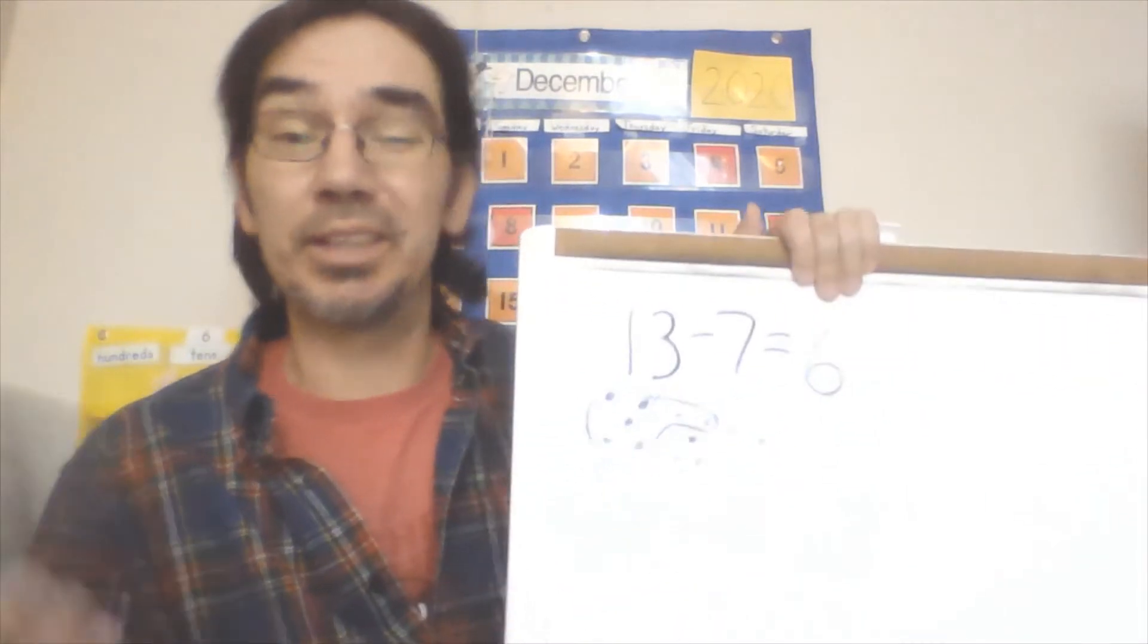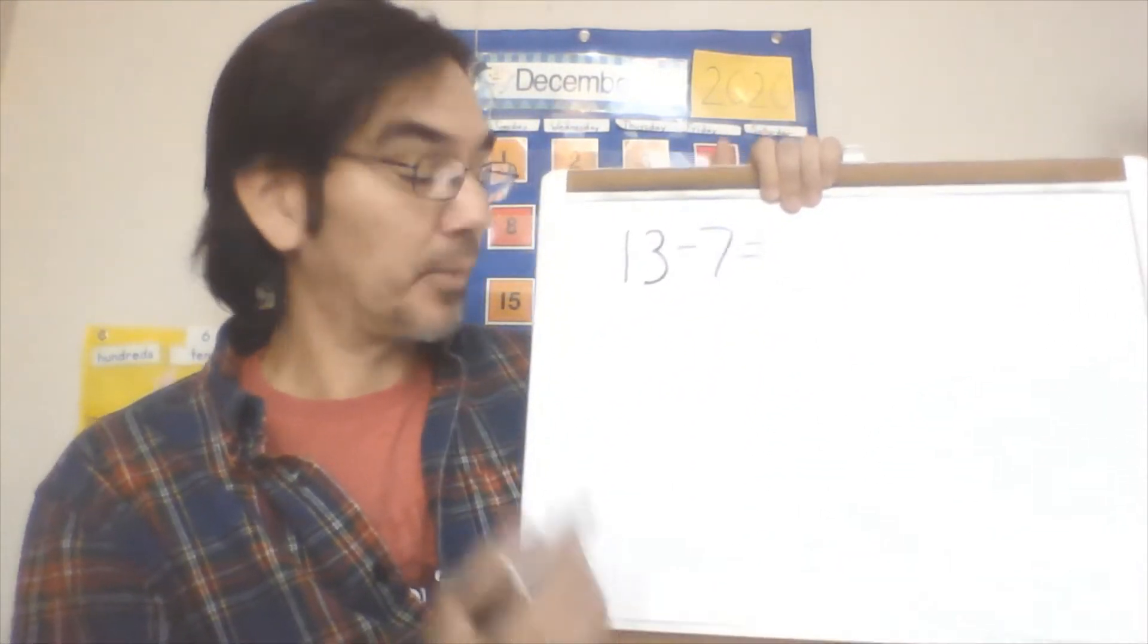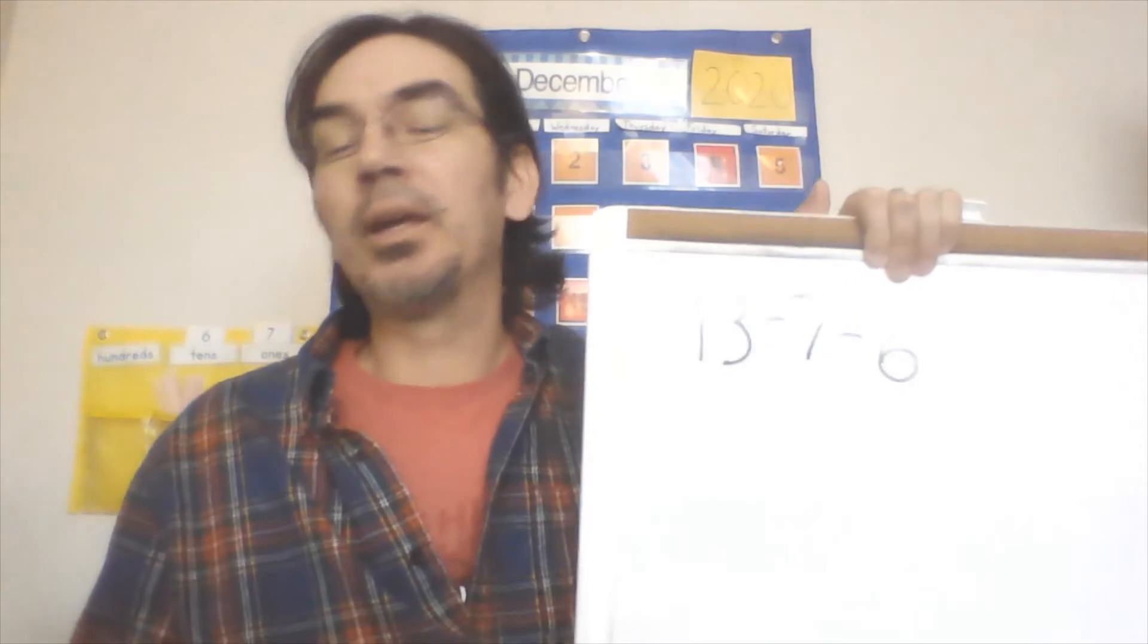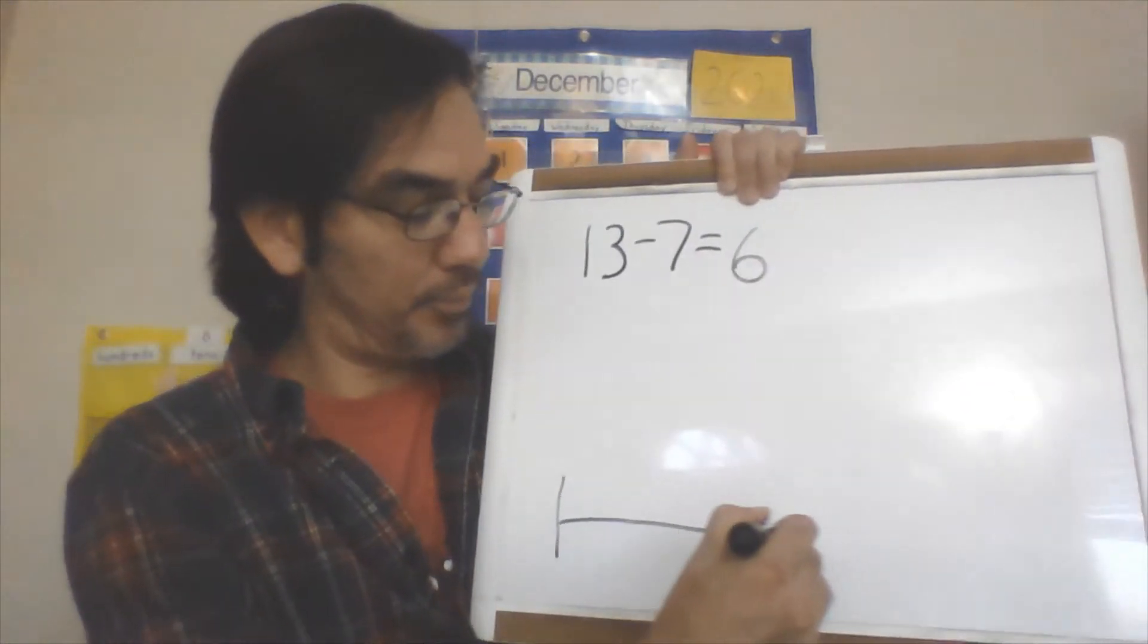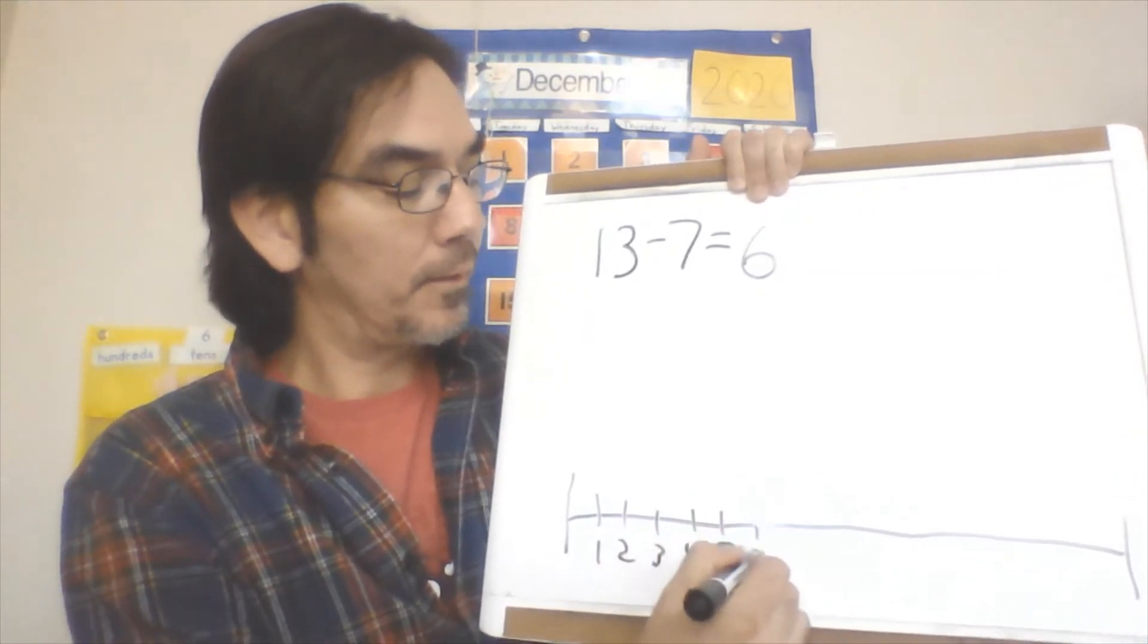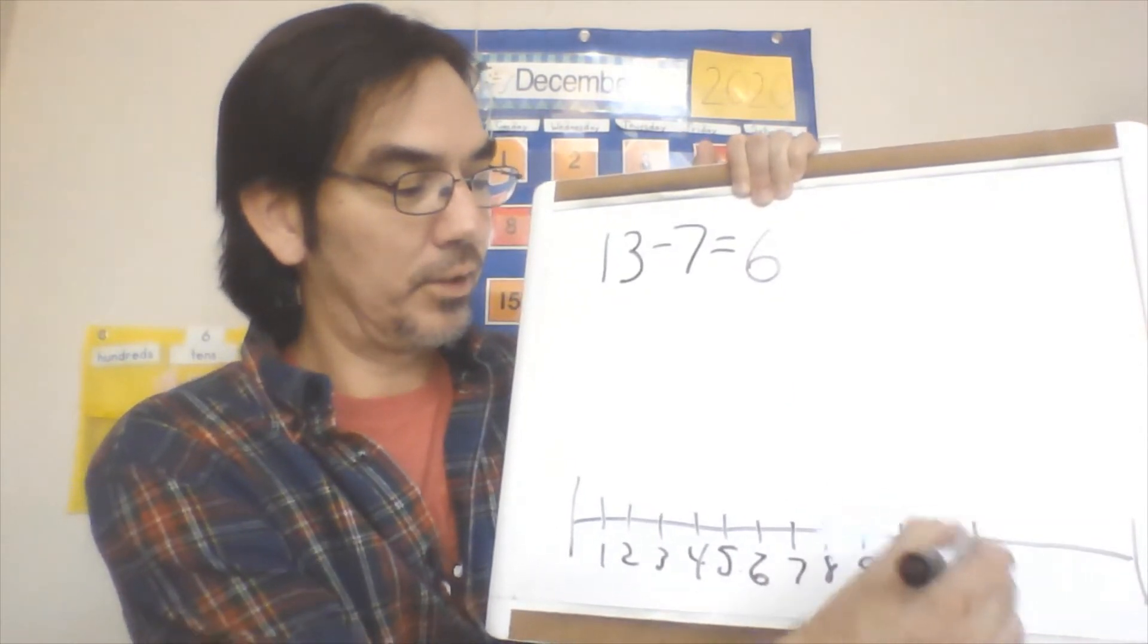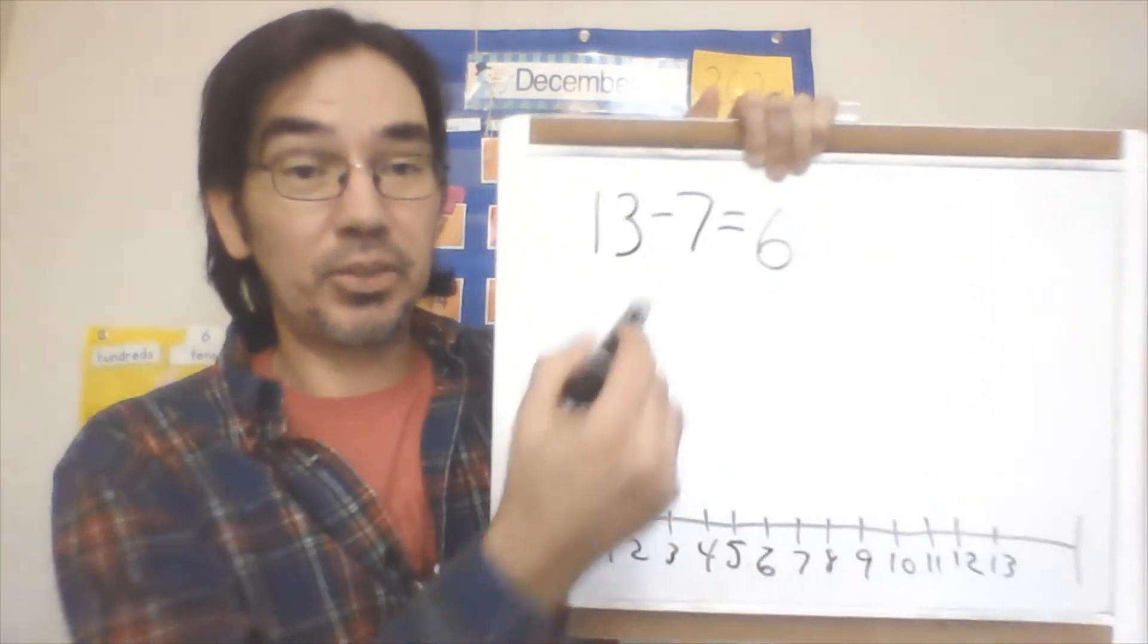That is our dot strategy. 13 minus 7 equals 6. We can test this out by using other strategies to make sure that we got it correct. One strategy we can use is a number line. If you don't have a number line with you or handy, or you left it somewhere like I did, then we just create our own. Draw a line like that and then start off with one and start counting up: six, seven, eight, nine, ten, eleven, twelve, thirteen.